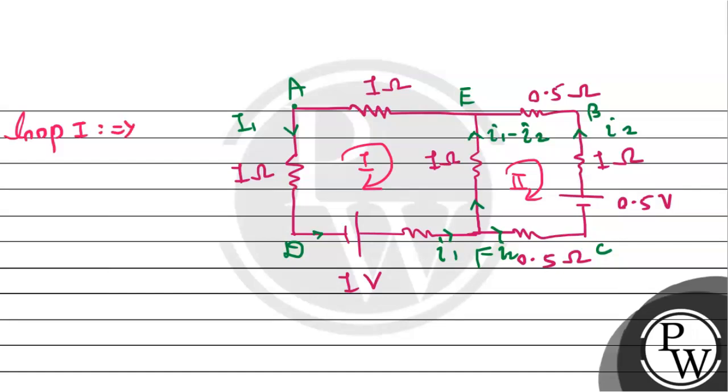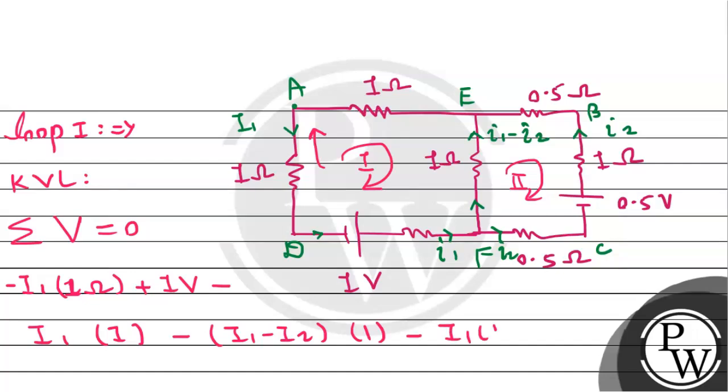For the first loop, by using Kirchhoff's voltage law, the summation of voltage inside a loop must equal zero. The potential difference across resistance is current multiplied by resistance. So, minus I1 times 1 ohm resistance plus 1 volt potential minus I1 times 1 ohm minus (I1 minus I2) times 1 ohm minus I1 times 1 equals zero. Solving this equation, minus 4I1 plus I2 equals 1 volt. This is equation 1.